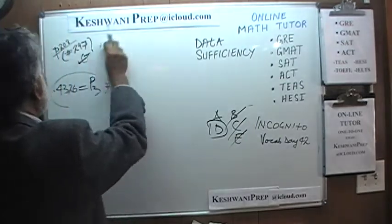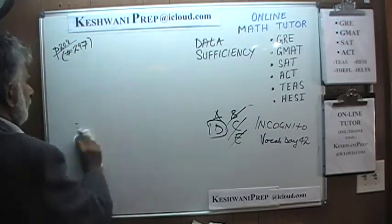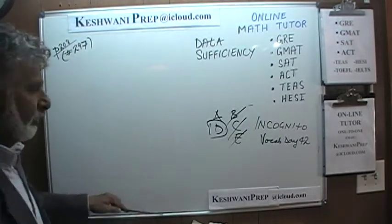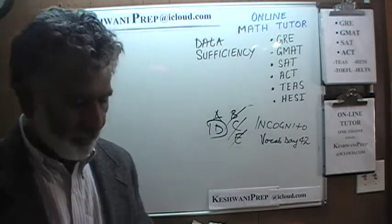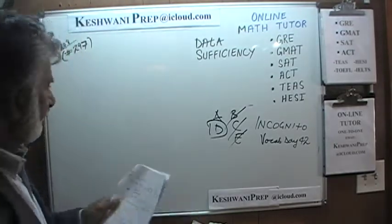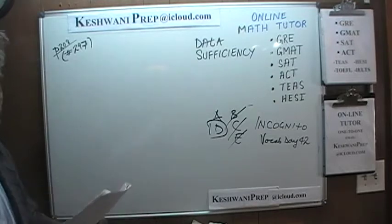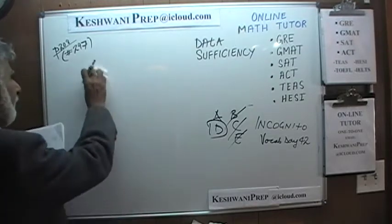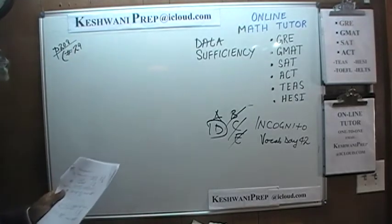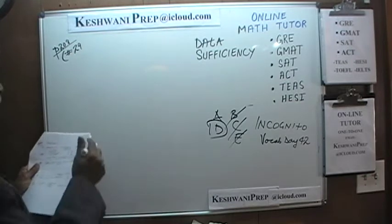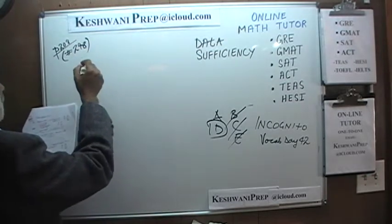As I keep repeating, you mustn't try to do the full calculation — that is not the point here, it will take forever. Sometimes we do work it out if it's very simple, but otherwise just establish sufficiency.